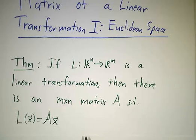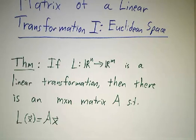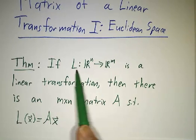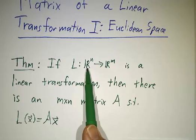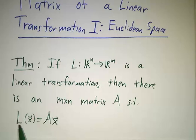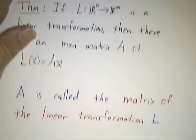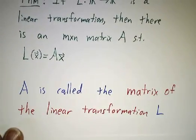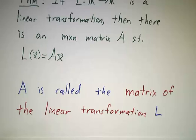We saw a whole bunch of other examples like projections and rotations and shears and all kinds of crazy geometric maneuvers, and they didn't look like matrix multiplication. But in fact, no matter what the linear transformation is, as long as it's from Rn to Rm, there is a matrix such that the linear transformation is just multiplication by that matrix. The name for that matrix, not surprisingly, is the matrix of the linear transformation.